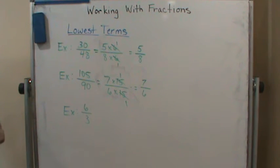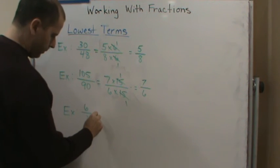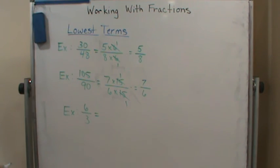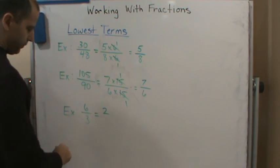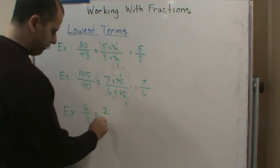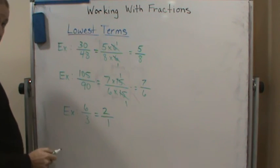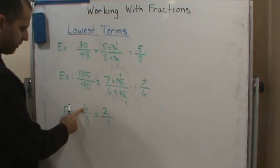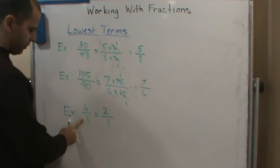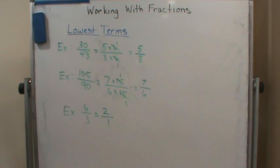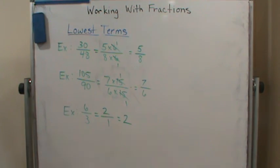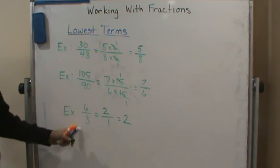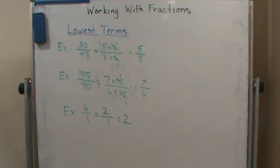Now what about the next one? What's the largest number that will divide both the top and the bottom? In this case it's 3. So 6 divided by 3 is 2, and 3 divided by 3 is 1. But 2 divided by 1 is just 2, so we can simply write 2. So 6/3 in lowest terms is really just the whole number 2.